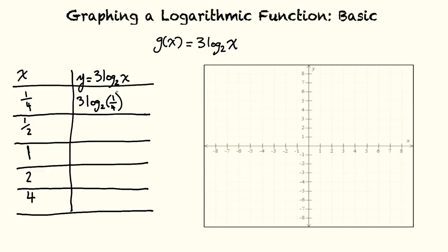Well, as we said for solving logarithms, when we have base 2 is 2 to the what equals 1 fourth. Here we can see that's negative 2. 2 to the negative 2 equals 1 fourth. Negative 2 times 3 equals negative 6. And that's our first value of y.